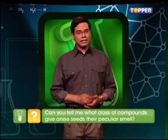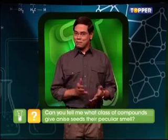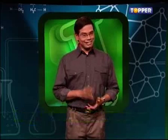It's that time of the day when I say goodbye. But before I go, here is a food for thought: Can you tell me what class of compounds gives anise seeds their peculiar smell? I know you have guessed that it is an ether, and you are quite right. Its IUPAC name is 1-methoxy-4-(2-propenyl)-benzene, or you can also call it para-propenyl-anisol.